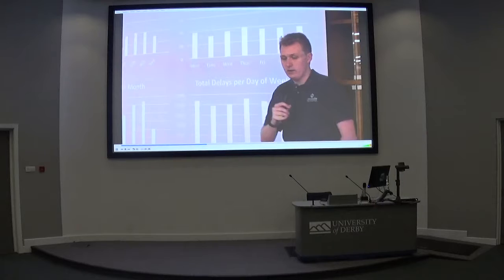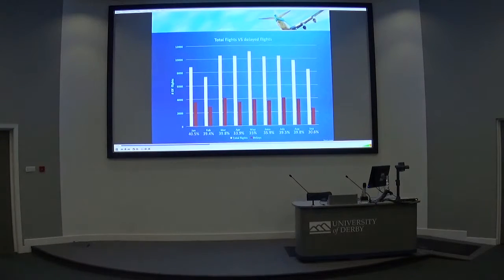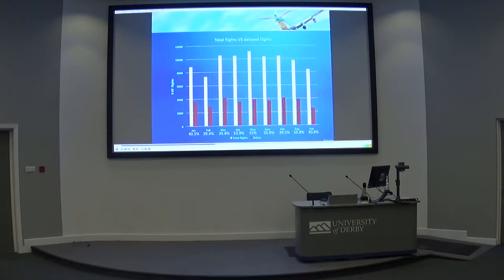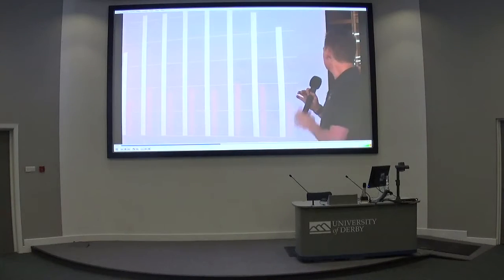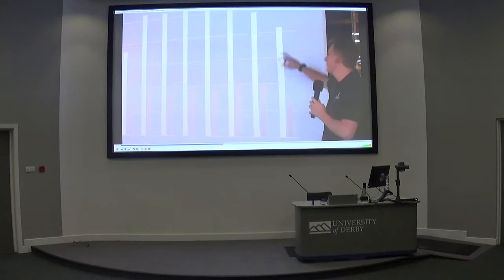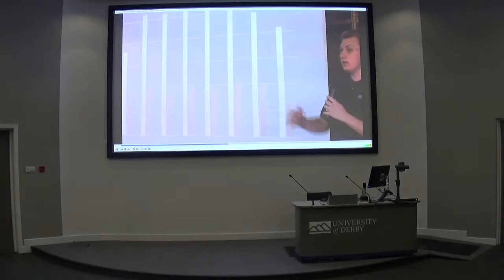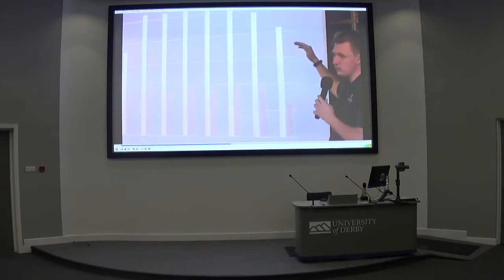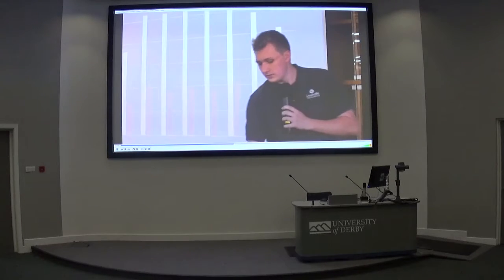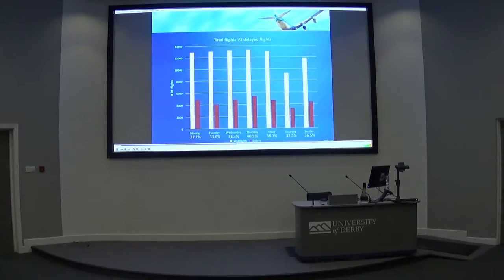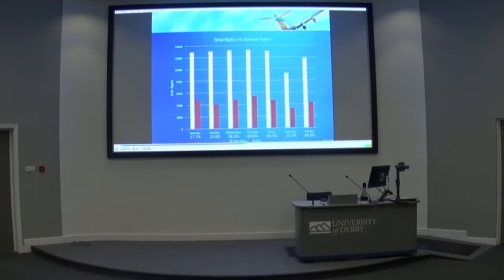Why are there fewer delays in September? Looking at total flights versus delayed flights — the white column shows total flights for that month and the rest shows flights delayed by any amount. The percentage between delays and actual flights is still fairly consistent, because the reason there are more delays in August and fewer in September is simply the total volume of flights. The delay rate stays constant at about 35 to 40 percent throughout.